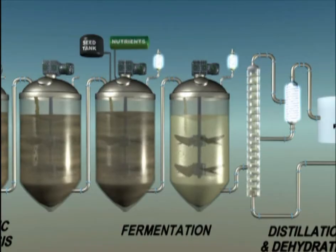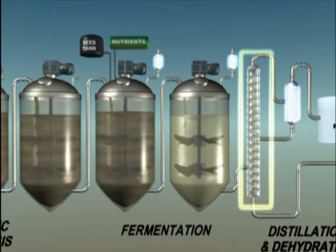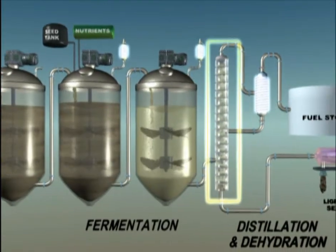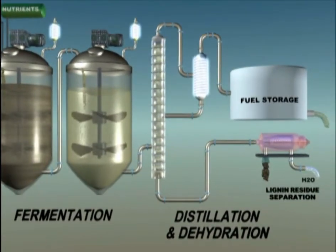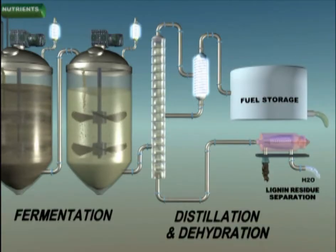In the case of ethanol, the liquid is separated by distillation, which is a method of separating mixtures based on differences in their boiling points. The resulting ethanol is collected and purified for use in blending with fuel.